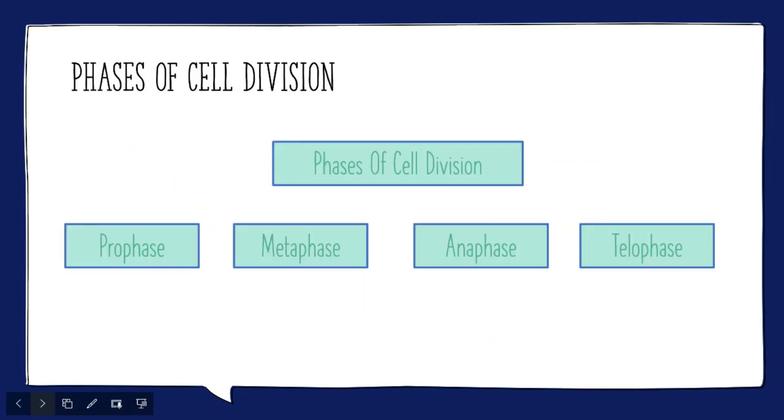Now there are four phases of cell division. They are prophase, metaphase, anaphase, and telophase.